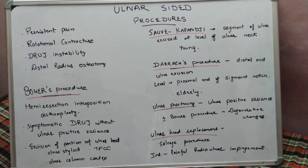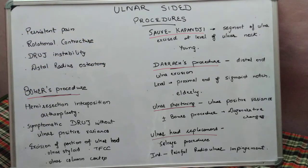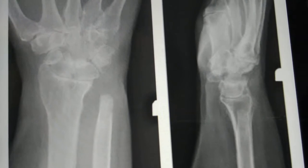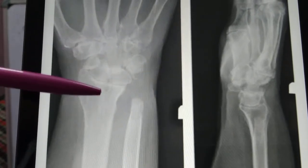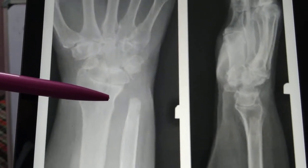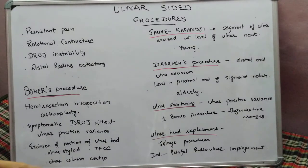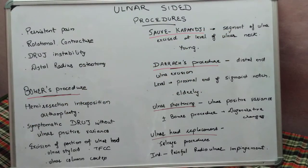The next procedure is the Darrach procedure, where the distal end of the ulna is excised completely. The level of excision is defined from the proximal level of the sigmoid notch — the ulna is excised at the level of the proximal sigmoid notch. This is done only in elderly patients.